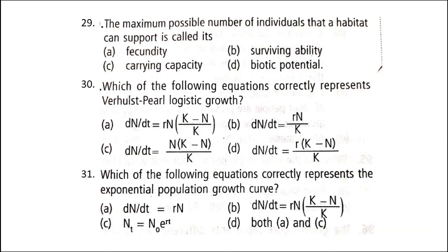Next: the maximum possible number of individuals that a habitat can support is called — the correct answer is option C: Carrying capacity. In nature, a given habitat has resources to support a certain number of individuals of a population beyond which no further growth is possible. This limit is called nature's carrying capacity K for the species in that habitat.